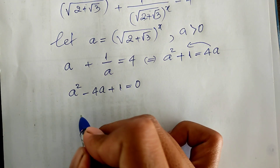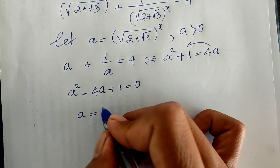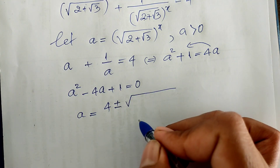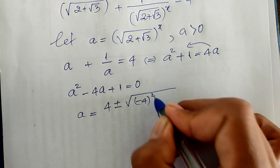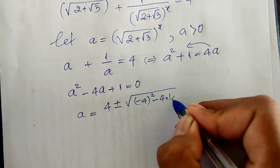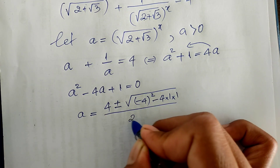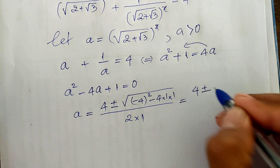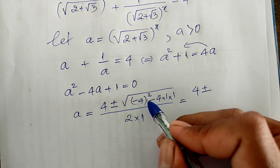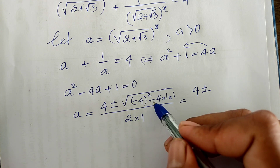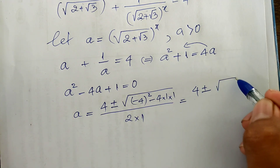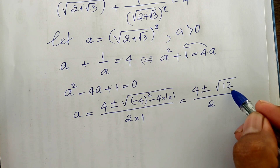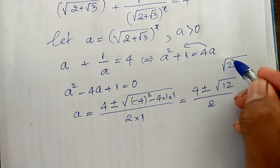Now we solve using the quadratic formula: A equals 4 plus or minus square root of 4 squared minus 4 times 1 times 1, all divided by 2 times 1. This equals 4 plus or minus square root of 16 minus 4, divided by 2. And 16 minus 4 gives us 12. So we get square root of 12 divided by 2.